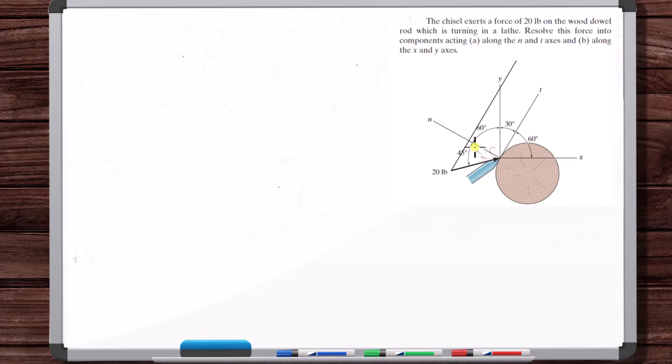But we know this is 90 degrees, and then we know it tells us that this is 45 degrees here. So this is 20 and we need to find for part A, we want to find this length and this length, if this is 20 and these are our angles. So F along the T direction is F_T and then this is F_N.